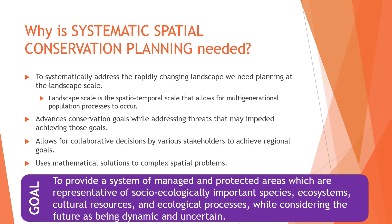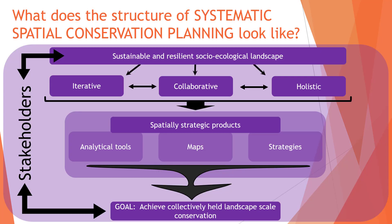The overall goal of systematic spatial conservation planning is to provide a system of managed and protected areas which are representative of socio-ecologically important species, ecosystems, cultural resources, and ecological processes, all while considering that the future is both dynamic and uncertain. It has multiple components driven by stakeholder engagement where the overall goal is to achieve collectively held landscape-scale conservation. This sustainable and resilient socio-ecological landscape is achieved through planning that is iterative, collaborative, and holistic, leading to spatially explicit and strategic products that include analytical tools, maps, and strategies.